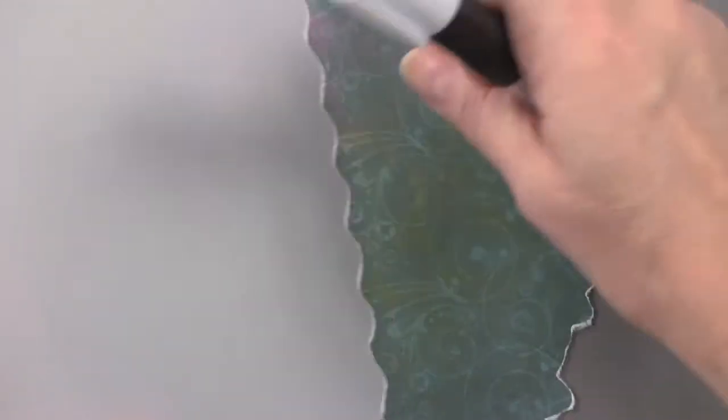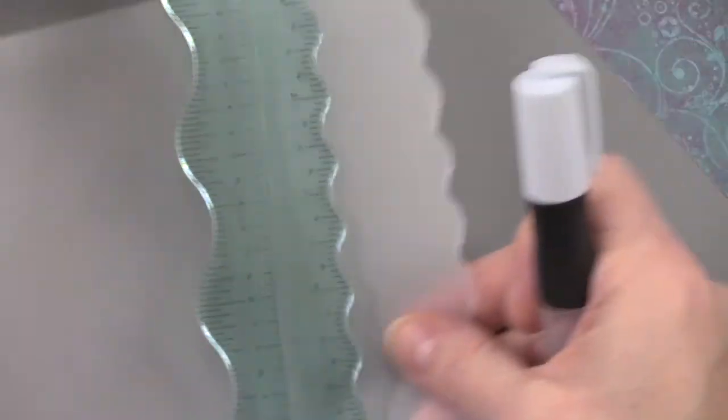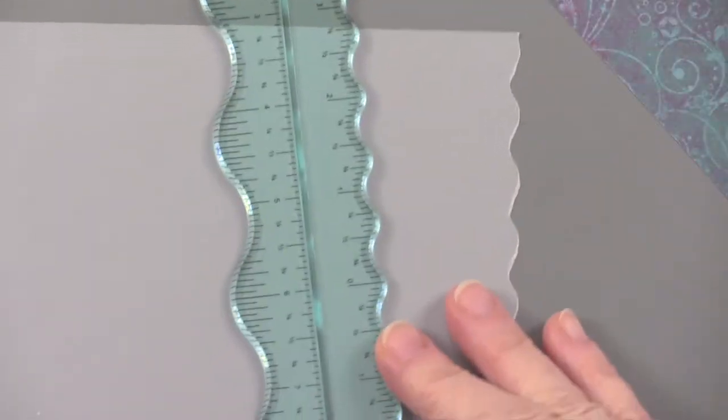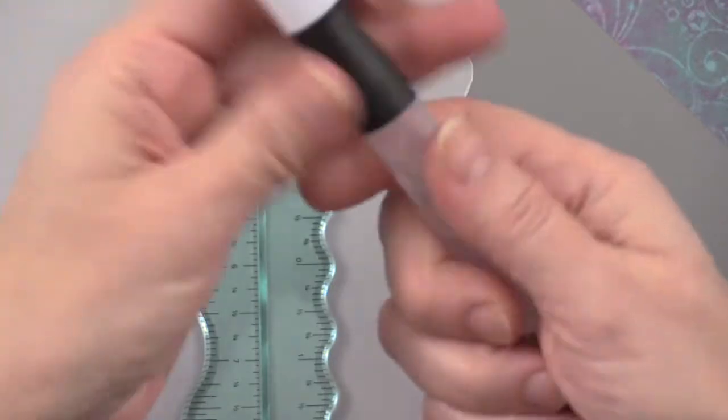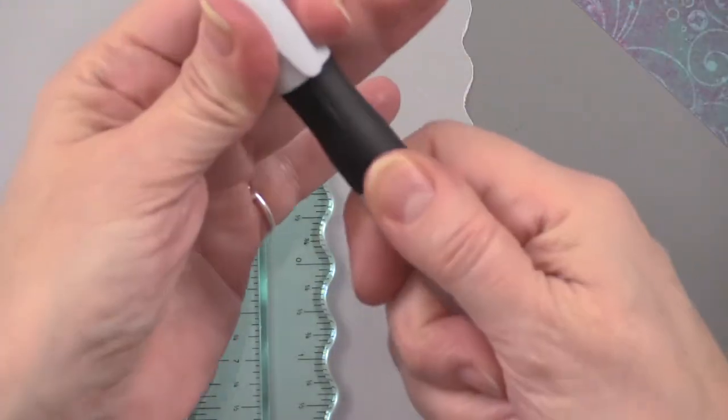This works best if you use the water pen with harder to tear papers like vellum or cardstock. I'm going to place it wherever I want on the vellum, maybe right about there. Then I take the water pen - it unscrews here, you fill it up with water, and it has a little end that picks up the water.